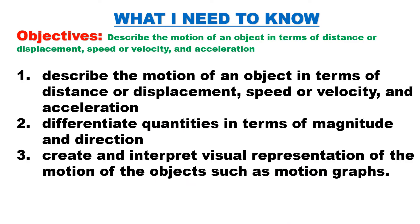What I need to know — General objectives: describe the motion of an object in terms of distance or displacement, speed or velocity, and acceleration. At the end of this module, you should be able to: 1. Describe the motion of an object in terms of distance or displacement, speed or velocity, and acceleration. 2. Differentiate quantities in terms of magnitude and direction. And 3. Create and interpret visual representations of the motion of objects, such as motion graphs.